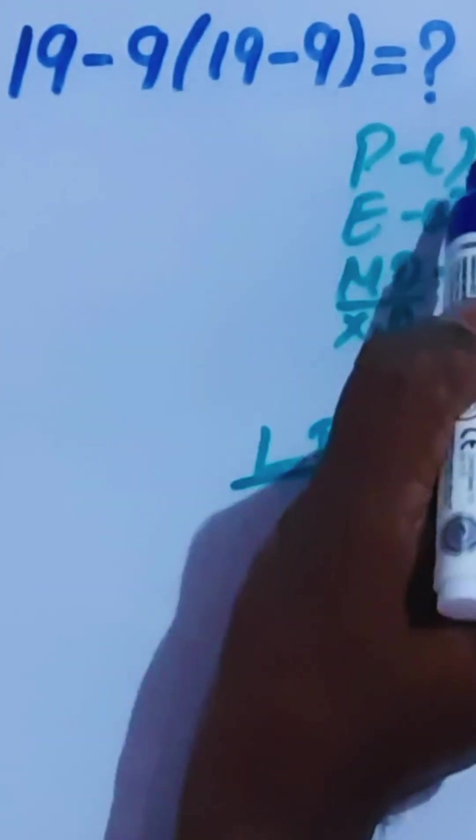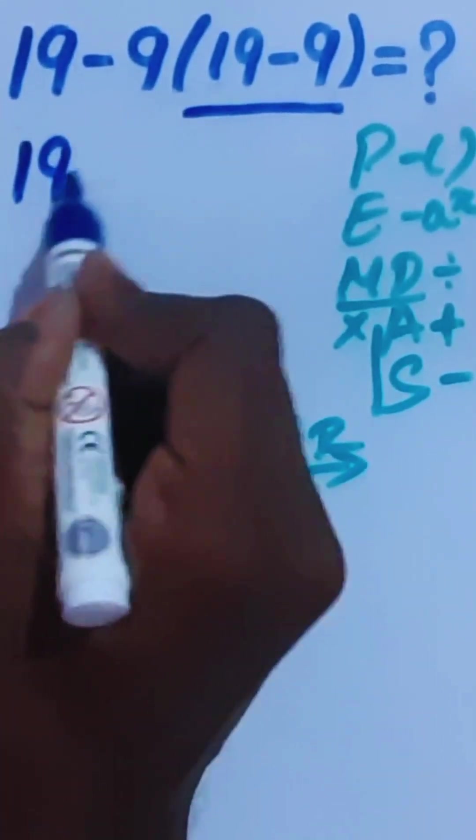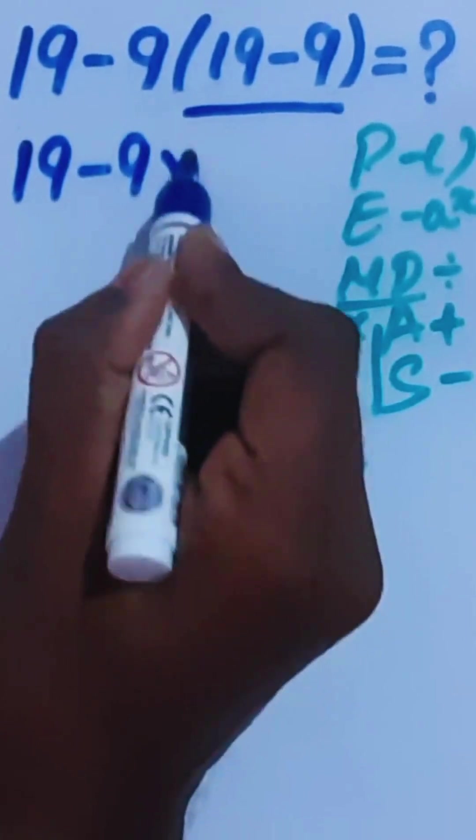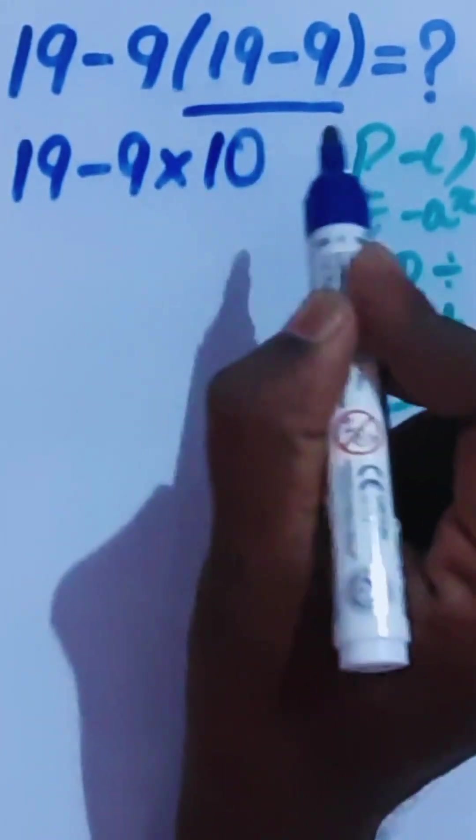Now, as for this PEMDAS, bracket is first. So, 19 minus 9 times 19 minus 9 - the bracket gives us 10.